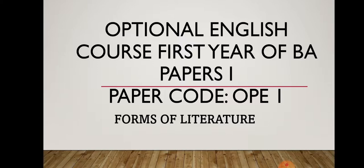So the pattern for you is: totally there are five subjects. First is English compulsory, second is Hindi or Marathi, third is one of the optionals that you have chosen — English optional — and the remaining two subjects are as per your choice. So there are total five subjects, but there might be totally eight papers. There are total eight papers in your first year first semester examination.